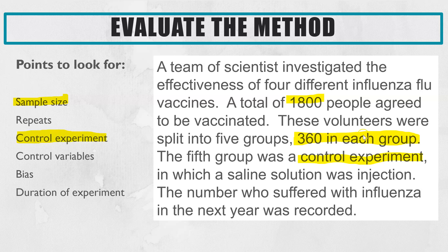The next thing we can see is that the fifth group was a control group — they were given just a saline solution instead of one of the active vaccines. That would be an advantage because we do have a control experiment, and it's useful because it means that any differences we then see between each vaccine are due to the active ingredient rather than the placebo effect.